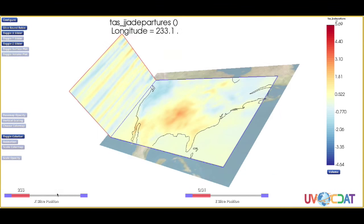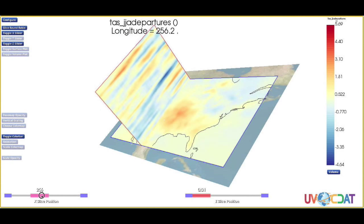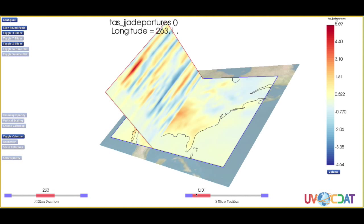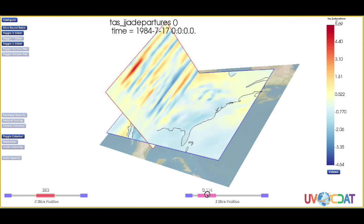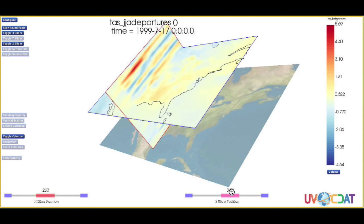As we take a north-south slice and move it west to east, we see a particularly warm period — this is the 2011 Texas heat wave. This heat wave was the most intense ever recorded, and because it followed a dry winter, its effect on agriculture was exacerbated and 1.5 million hectares burned.